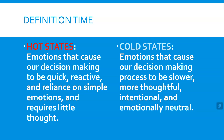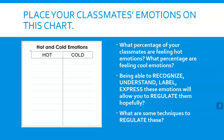Now that you have the definitions of hot and cold states, plot your classmates' emotions on the chart — those who are feeling hot emotions and those feeling cold. Then break down percentage-wise what the class is. A little sneaky math for you.